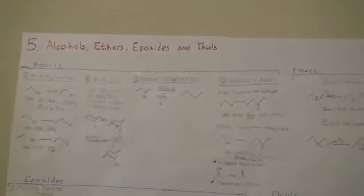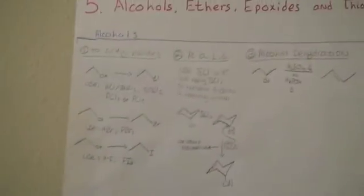This is part 5 of Orgo Speed Review, and it covers alcohols, ethers, epoxides, and thiols. If you're using Paula Bruice's text, this is essentially an approximation of chapter 11. It's a little bit of a hodgepodge, but let's get going.